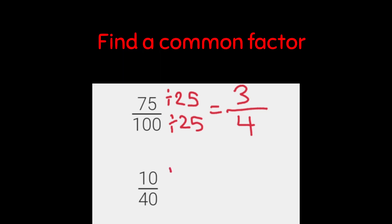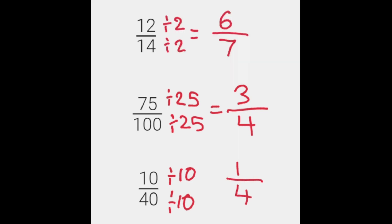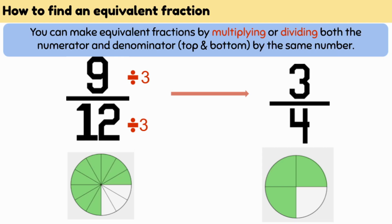Ten over forty — we're going to divide by ten. How many times does ten go into ten? It goes in once. How many times does ten go into forty? Four. So one quarter is equivalent to ten over forty. That's an easy way to make equivalent fractions — you can either divide by something that fits into both the top and the bottom, or you can multiply by any number to give an equivalent fraction.